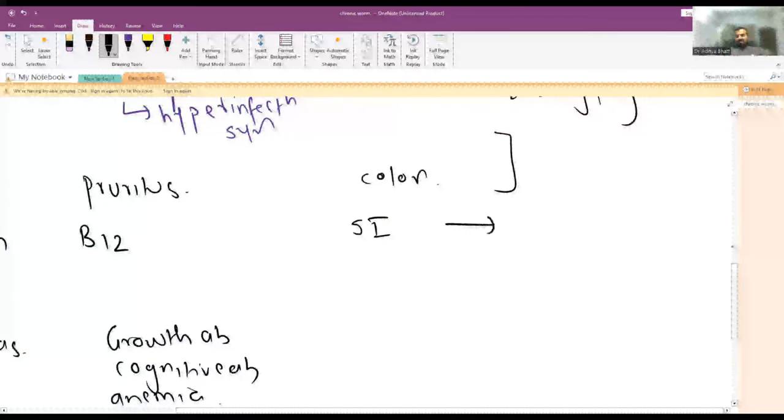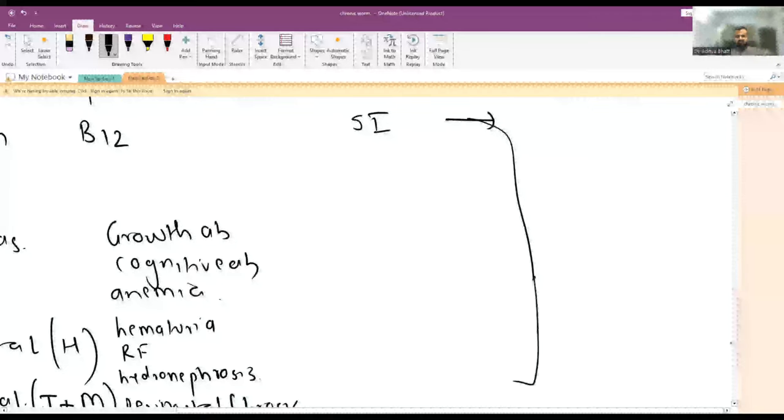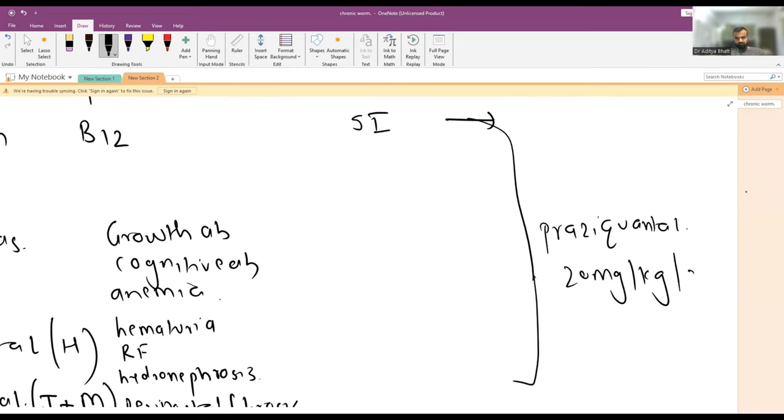For Diphyllobothrium latum and schistosomiasis, the drug of choice is praziquantel. That is also given for a single dose. The dose is 20 mg per kg per day, so only single dose is enough. You may give it for two days. This is about the summary of worm infections and infestations in the pediatric population.